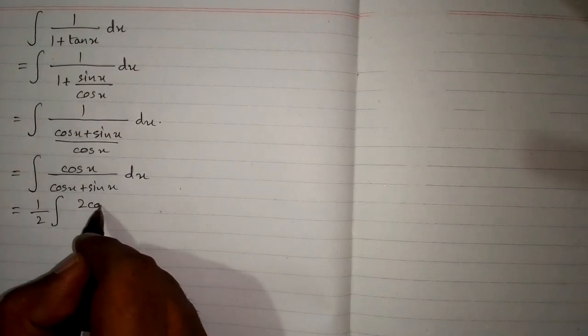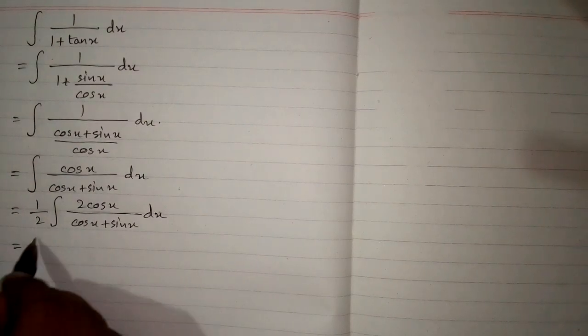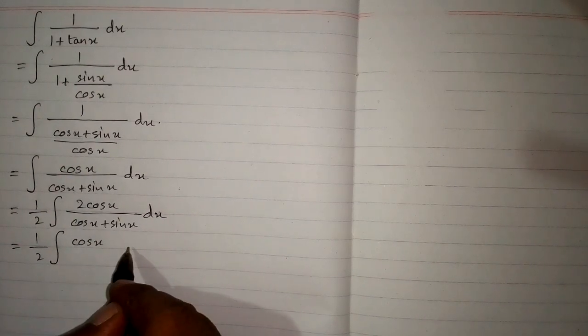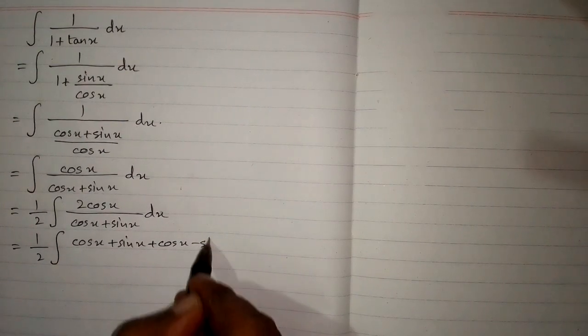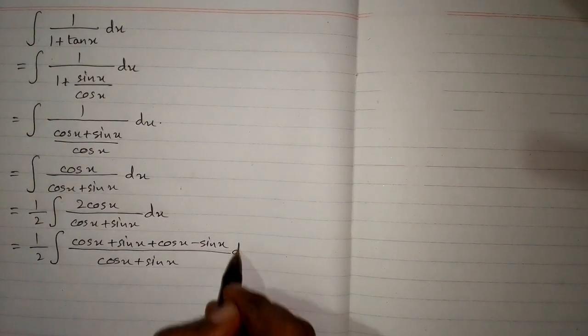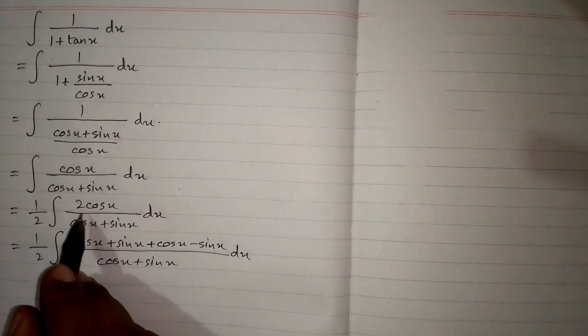Now we will do some manipulation. We can multiply and divide the integral by 2, so first we write half and then 2·cos(x) upon cos(x) plus sin(x). The numerator becomes cos(x) plus sin(x) plus cos(x) minus sin(x) upon cos(x) plus sin(x), because sin(x) minus sin(x) is 0 and cos(x) plus cos(x) is 2·cos(x).